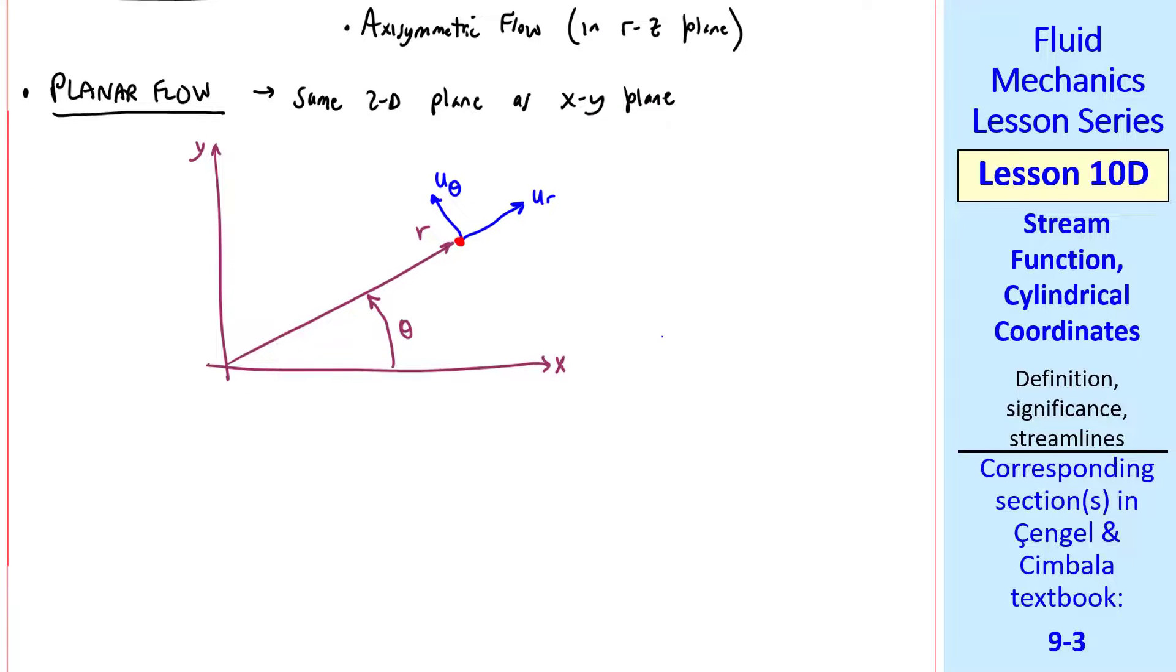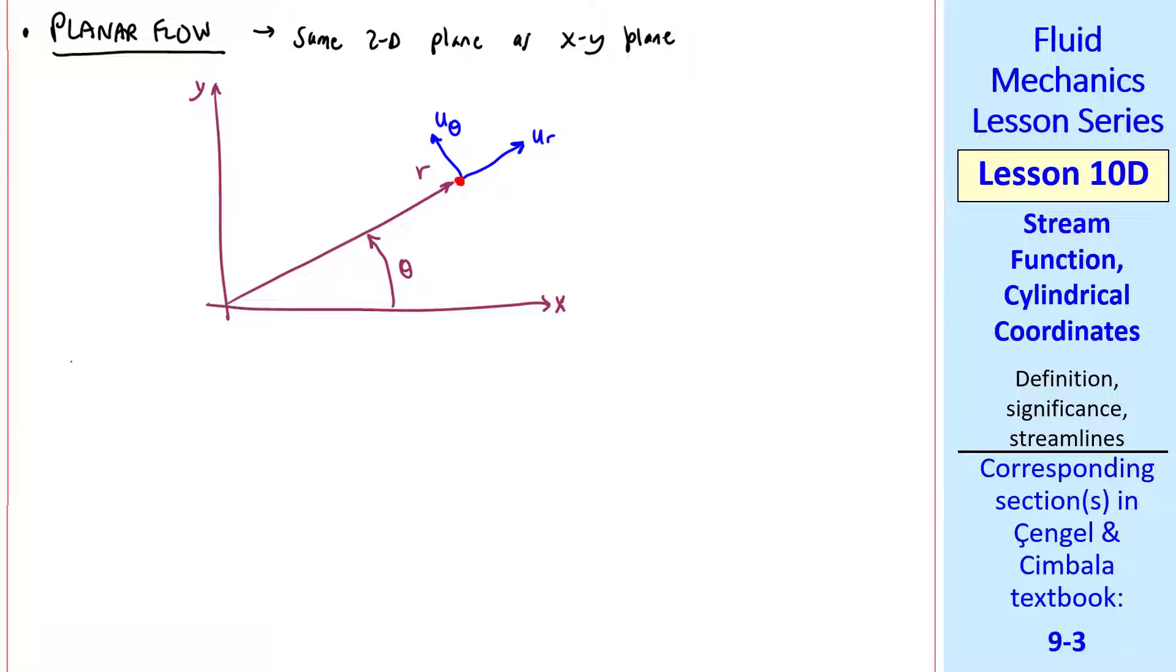Well, as we did with Cartesian coordinates, we start with the continuity equation. Recall, in cylindrical planar coordinates, we had 1 over R del del R R U_R, plus 1 over R del del theta U_theta, plus del U_Z del Z equals zero. We'll talk only about two-dimensional flows, which means U_Z is zero everywhere, and del del Z of anything is zero. Once we eliminate this term, we see that there's a 1 over R in both these terms. So we multiply by R.